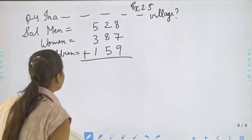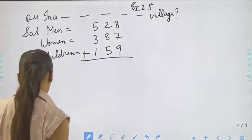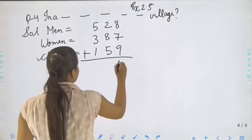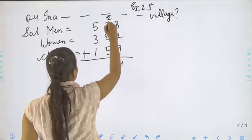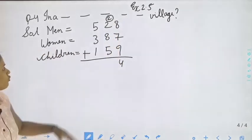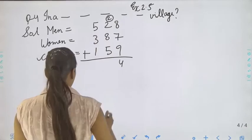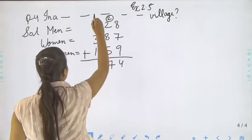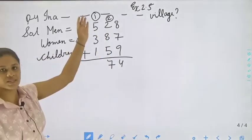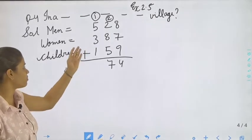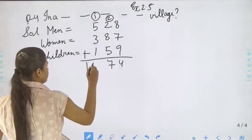9 plus 8 it will be 17, 17 plus 7 it will be 24. 2 plus 2 is 4, 4 plus 8 it will be 12, and 12 plus 5 it will be 17. 5 plus 1 it will be 6, 6 plus 3 is 9, 9 plus 1 is 10. The answer is 1074 is the total population of that village.